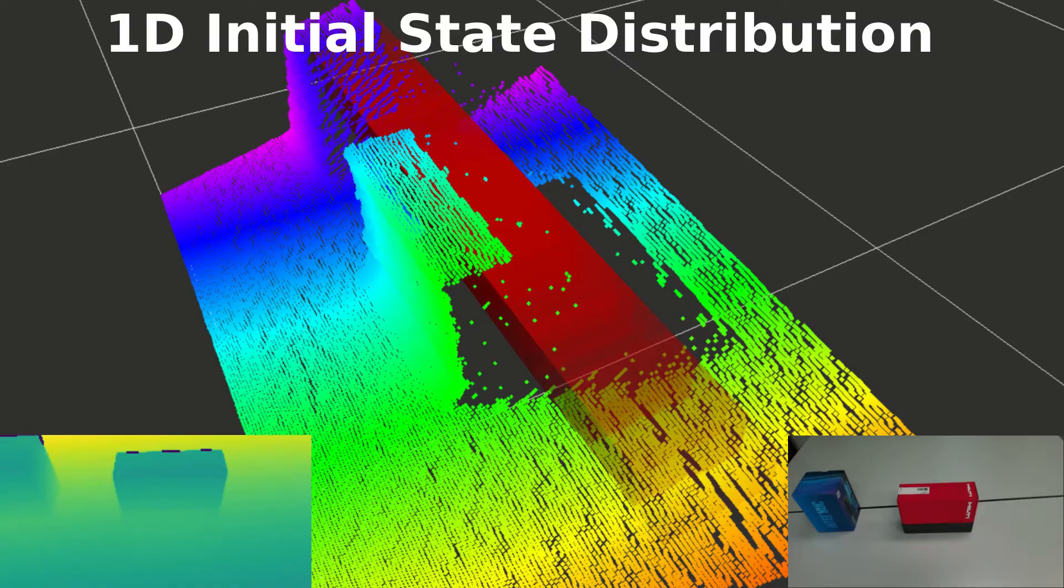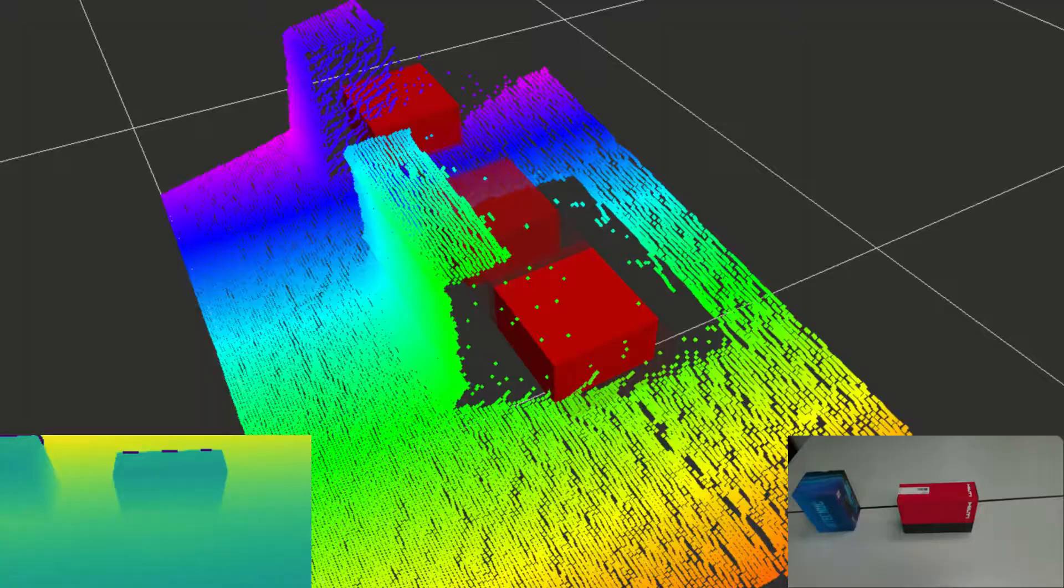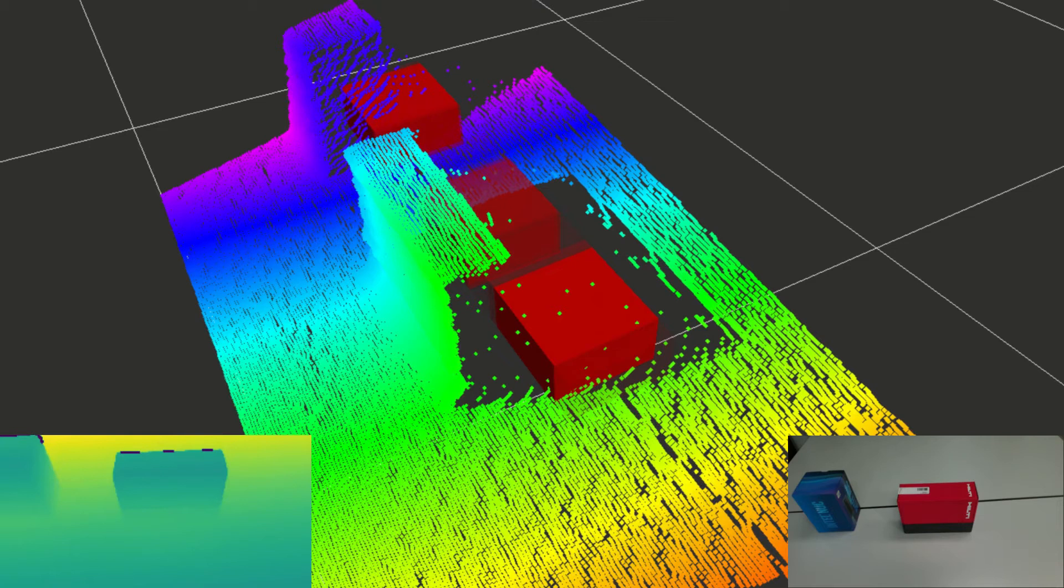After a few deep measurement update steps, the particle distribution becomes bimodal, with clusters of particles behind the two obstacles. Even though the target box is not visible yet, deep measurement update can leverage the knowledge of observed free space to eliminate some particles.